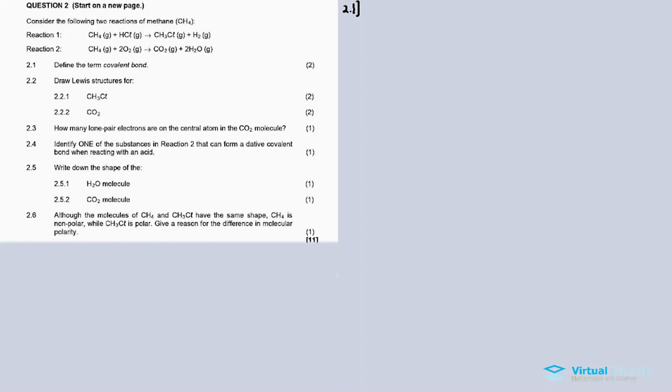2.1 asks to define the term covalent bond. We have three types of bonds: metallic bond, ionic bond, and covalent bond. Covalent bond involves the sharing of electrons. Ionic bond involves the sharing of electrons from a metal to a non-metal. Metallic bond is where the electrons become spread out between the atoms in that given metal.